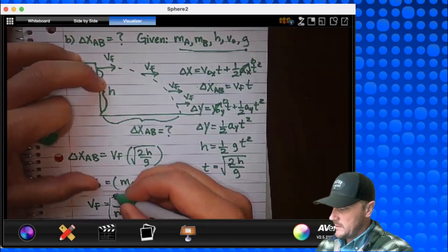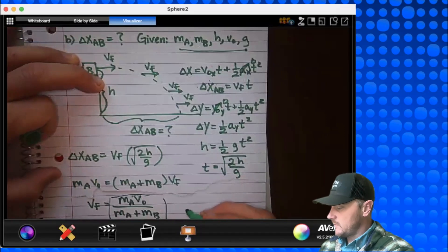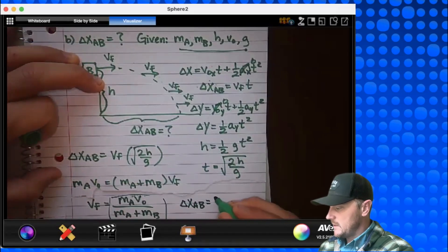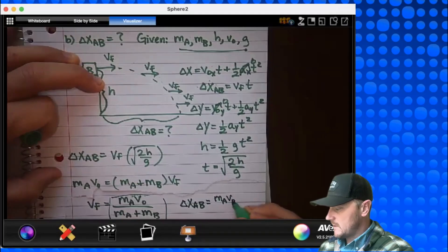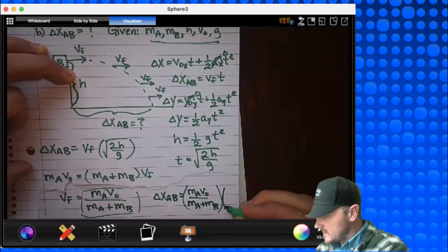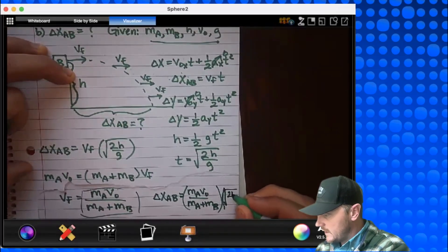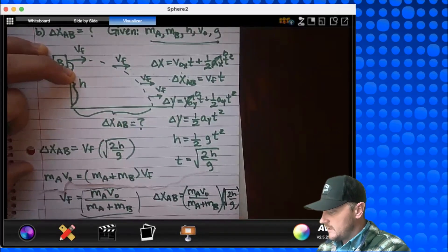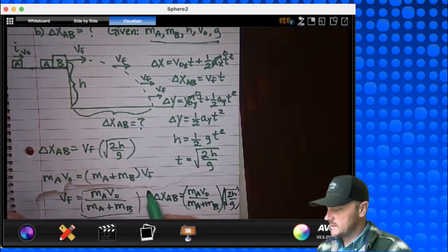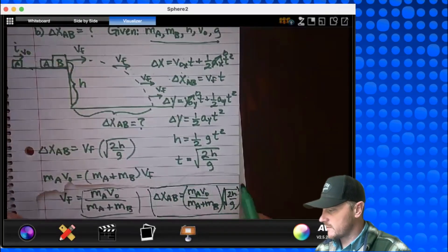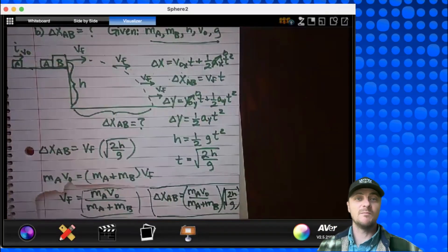So I'm going to take this expression, and I'm going to plug it in to that VF right there. So I will get delta XAB, this is my final answer, equals MA V0 divided by MA plus MB times square root of 2H over G. And you can see that all of those ideas in my final answer are part of the given information. Part B is done.